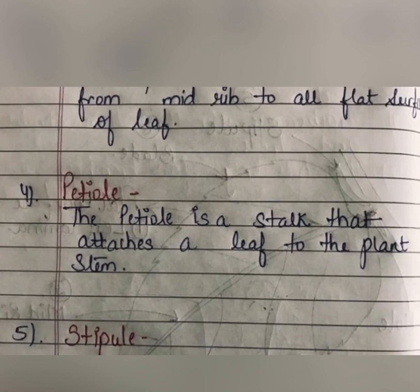Veins are called veins. Petiole is basically the stalk — the part which keeps the leaf attached to the stem. Stipule is a small leaf-like appendage found at the base of the leaf.